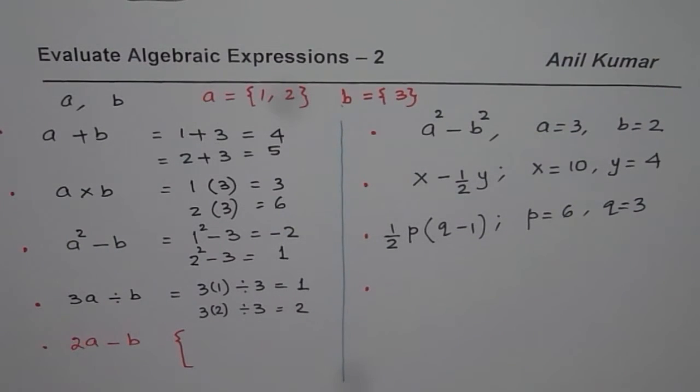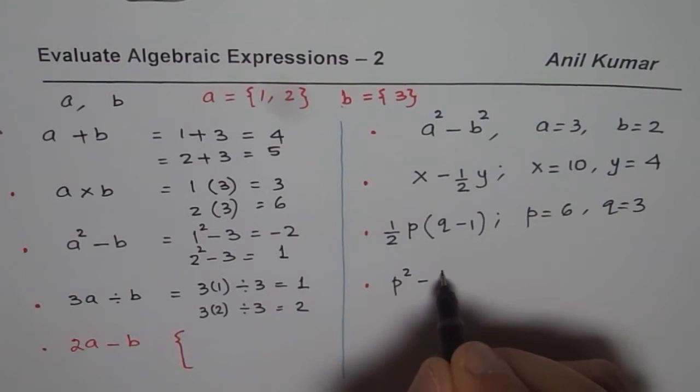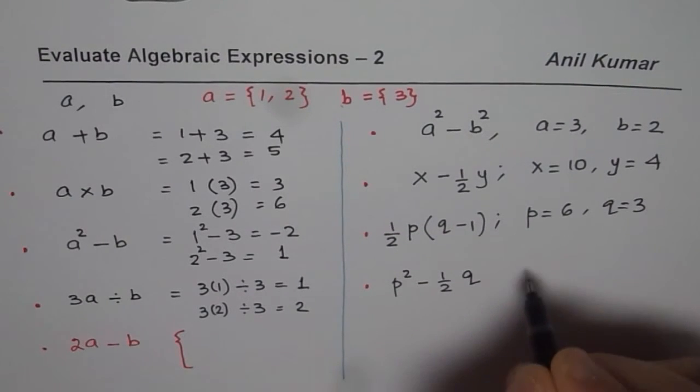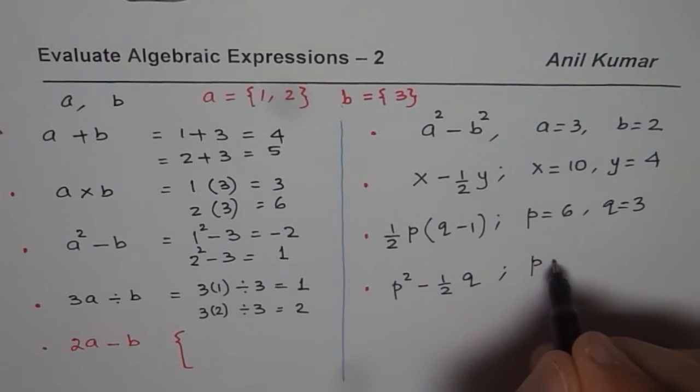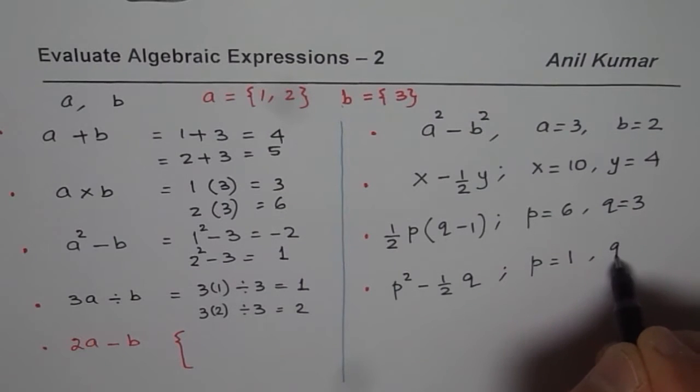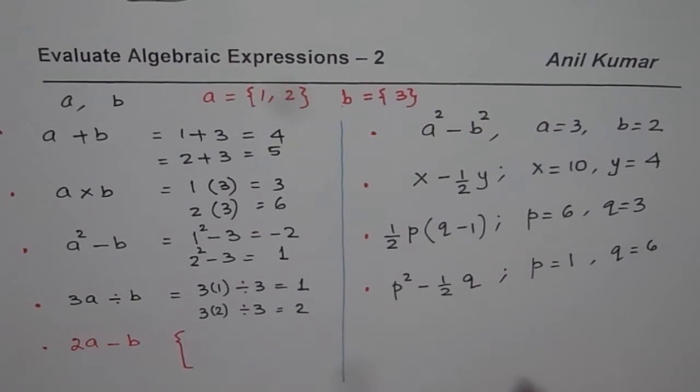Evaluate these expressions. And the last one for you is P square minus half of Q. In this case, let me write P as equal to 1 and let me write Q as equal to 6.